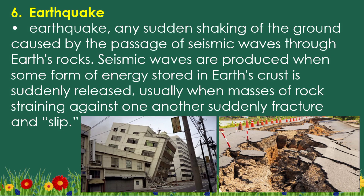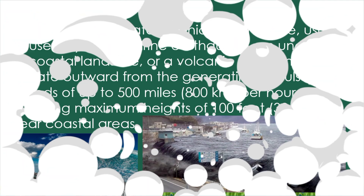Type 6: Earthquake. An earthquake is any sudden shaking of the ground caused by the passage of seismic waves through earth's rocks. Seismic waves are produced when some form of energy stored in earth's crust is suddenly released, usually when masses of rock straining against one another suddenly fracture and slip.